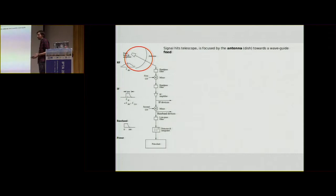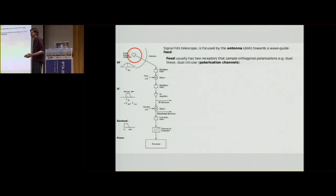We have the antenna at the top that focuses the signal into the feed horn and the amplifier. And the feed usually has two receptors to sample the different modes of polarization. We saw earlier that pulsars are highly polarized radio sources, so this is something that we need to account for in our observing setup.